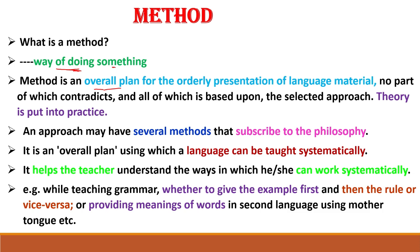Method is an overall plan for the orderly presentation of language material. For example, we have a language with a component like vocabulary. Teaching the nature of the subject is approach, and how you teach that vocabulary is method. For example, you start with one-letter words, then move to two-letter words and three-letter words — this is called orderly presentation of language material. This order is one method.